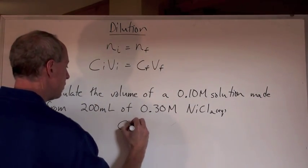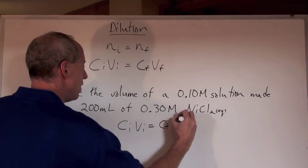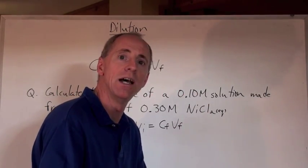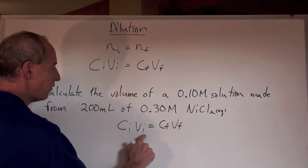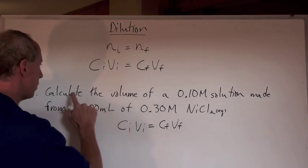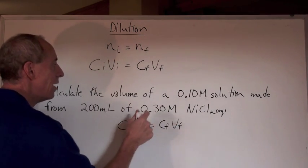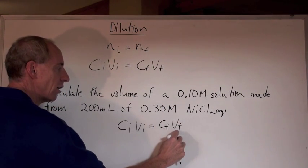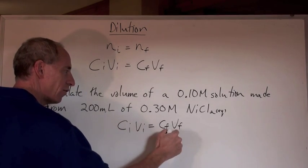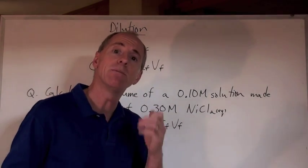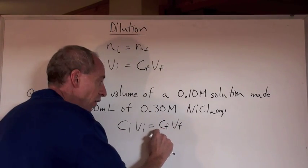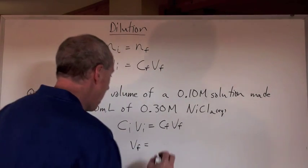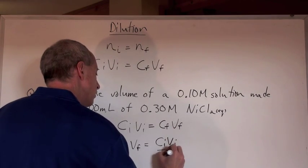You know how I like to do this? I like to go CiVi equals CfVf. This is good procedure for being able to express your answer properly. You write down the formula. You isolate the variable that you're looking for. In this case, we're looking for which volume? Calculate the volume of this, but it's made from these two. So that means these two are the initials here. This is the final concentration. You're looking for the final volume. What do you do to be able to find and solve for Vf here? You've got to divide both sides by concentration final.